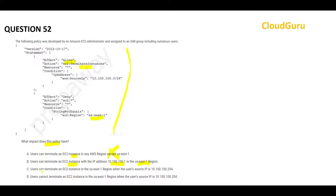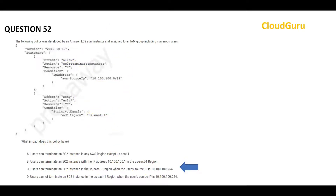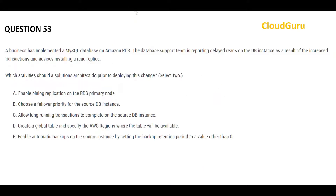Option C looks correct — users can terminate the EC2 instance in us-east-1, which is allowed, and the source IP is in a valid range up to 254, which is fine. Option D says it cannot terminate, which is incorrect because the allow permission to terminate has been granted, and the deny applies to all other requests except terminate. So Option C is the final answer.